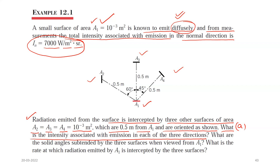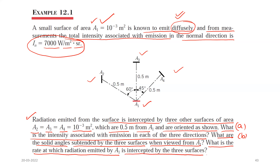Part b asks for the solid angles subtended by the three surfaces when viewed from a1. Part c asks for the rate at which radiation emitted by a1 is intercepted by the three surfaces — that is, the emission from a1 which is intercepted by a2, a3, and a4. Let us proceed to the solution.